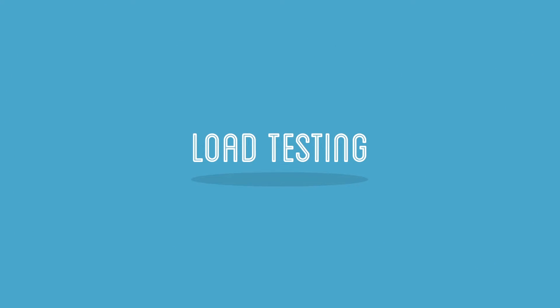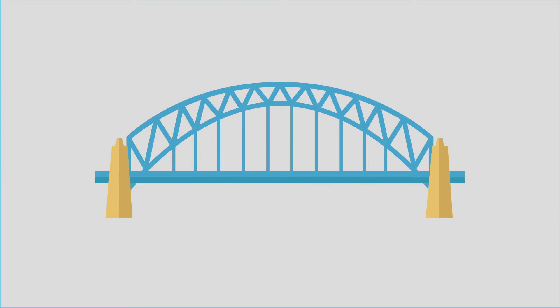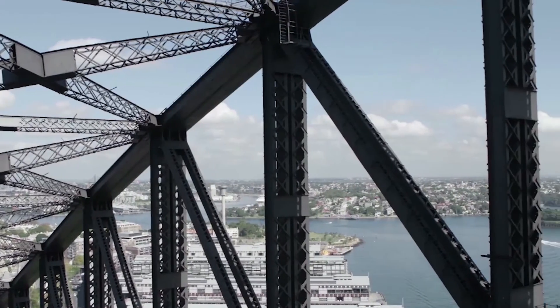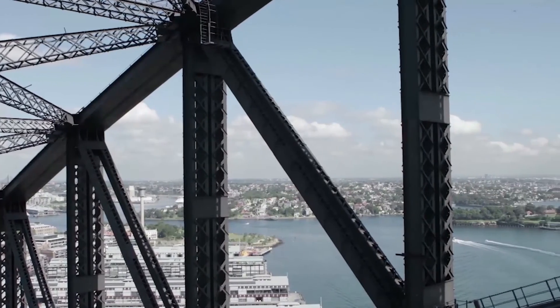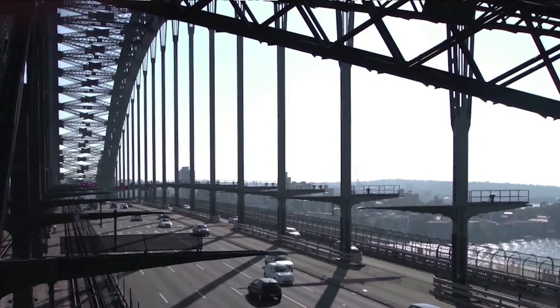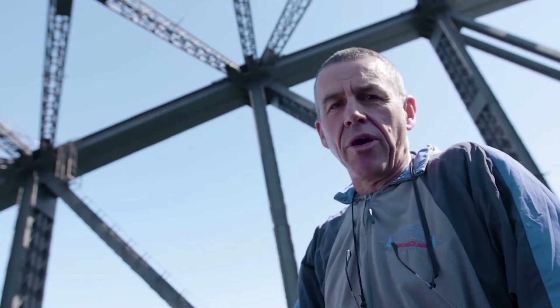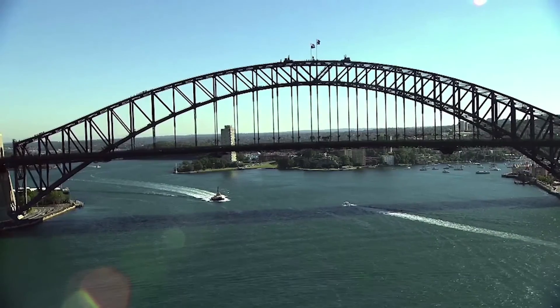Load testing is used to ensure that the bridge design can adequately cater for the forces. When the Sydney Harbour Bridge was being built, they placed ninety-seven steam trains on the road deck at once to test the strength of the bridge. There's thirty-nine thousand tonnes of steel in the arch arranged to carry the forces on the bridge. You can see verticals in compression, diagonals in tension, slender hangers always in tension, and the arch — the big chunky compression member on the bridge carrying the main compression forces.